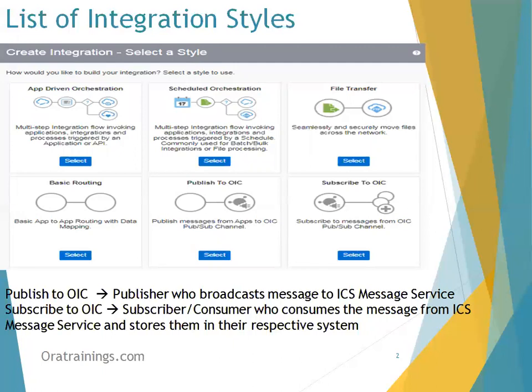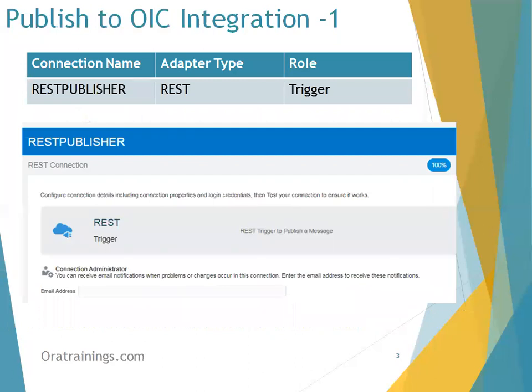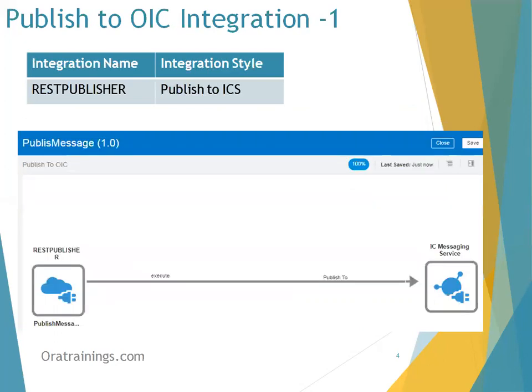Let's understand what is required to design this sample. I'll show you the screenshots involved. The first thing you have to do is design a Publish to OIC messaging integration. Whenever you want to create any integration in OIC, the first thing you do is create a connection. Here the connection name is REST Publisher, adapter style is REST, and the role is just Trigger. There is no need to mention any configuration details — simple, role is Trigger.